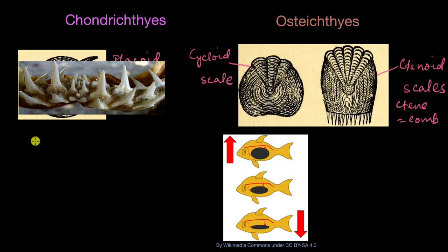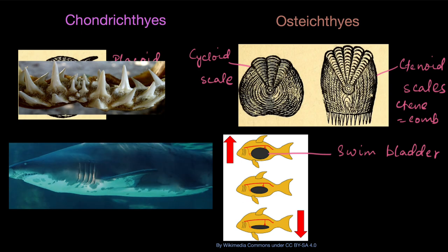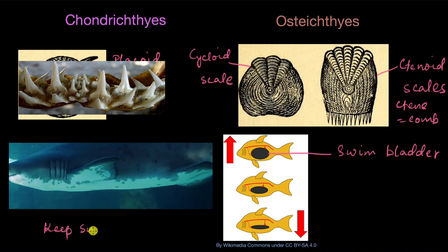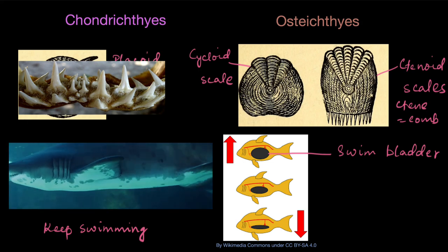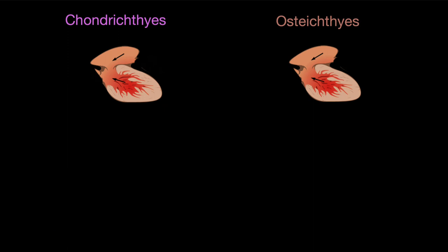Now we come to the question of how they stay afloat. Osteichthyes have a swim bladder, or air bladder. The fish can control the amount of air inside the bladder — less air causes the fish to sink toward the bottom, and more air causes it to float toward the top. Chondrichthyes don't have any swim bladder, so they must keep swimming to maintain their depth. If they stop swimming they tend to sink toward the bottom.